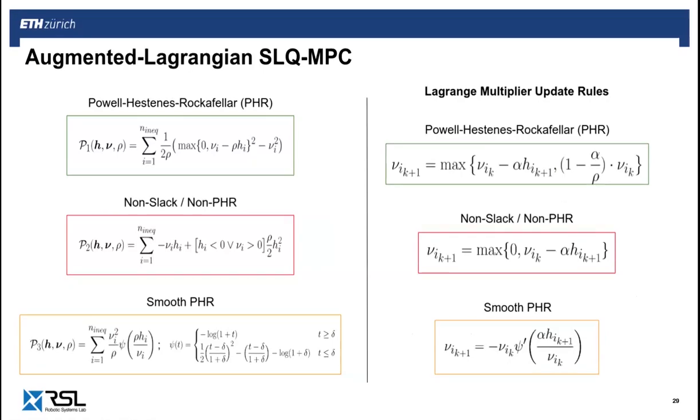As a result, we get the following update rules corresponding to the different augmented Lagrangian penalties. Alpha here is a step length parameter. Notice that if we set alpha equal to rho, then these equations coincide with the updates given by the standard heuristic.